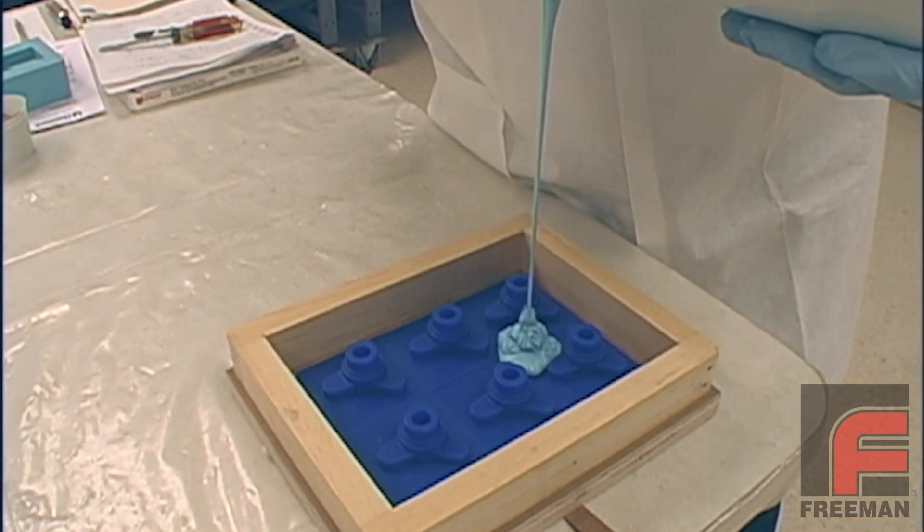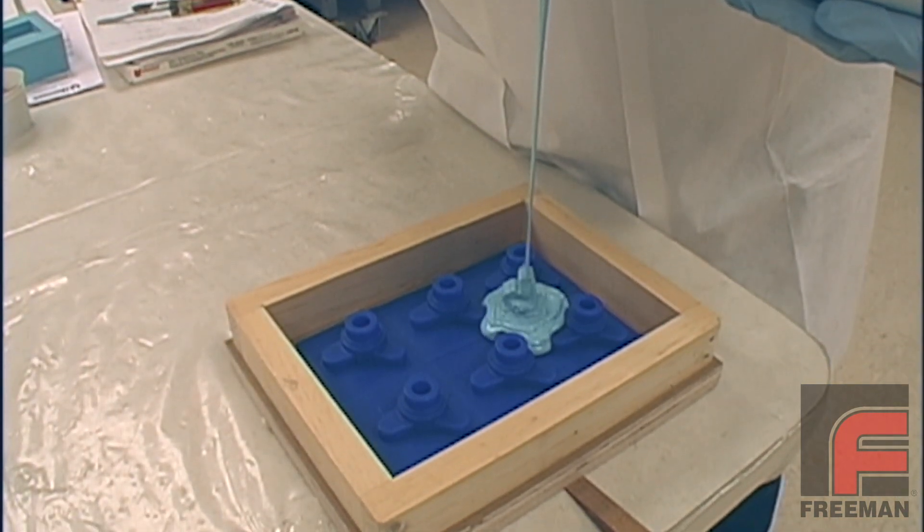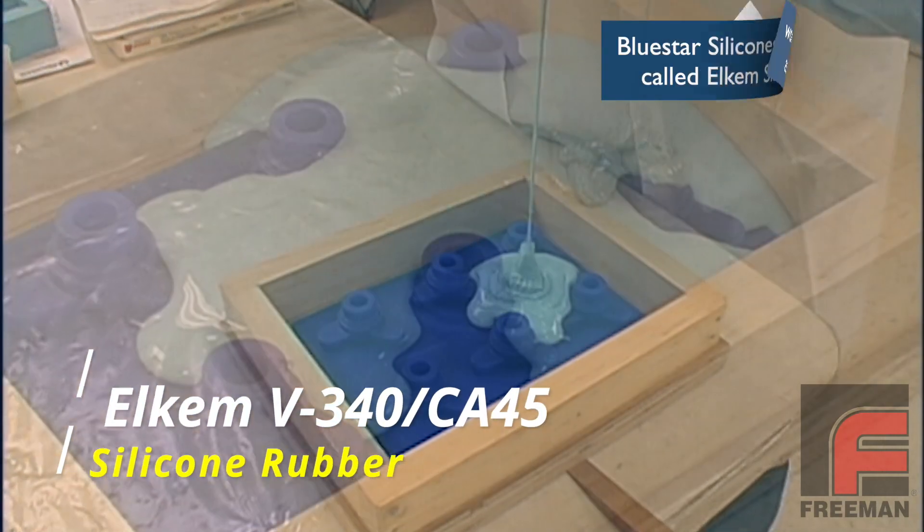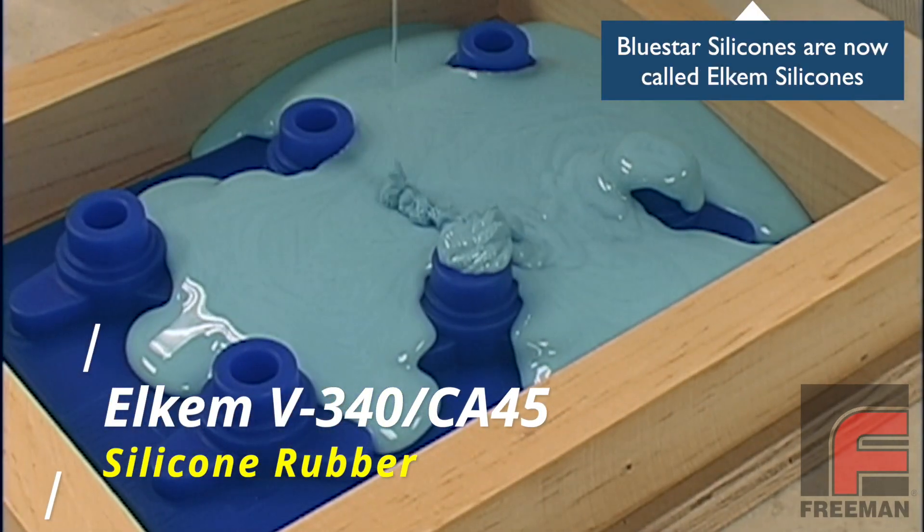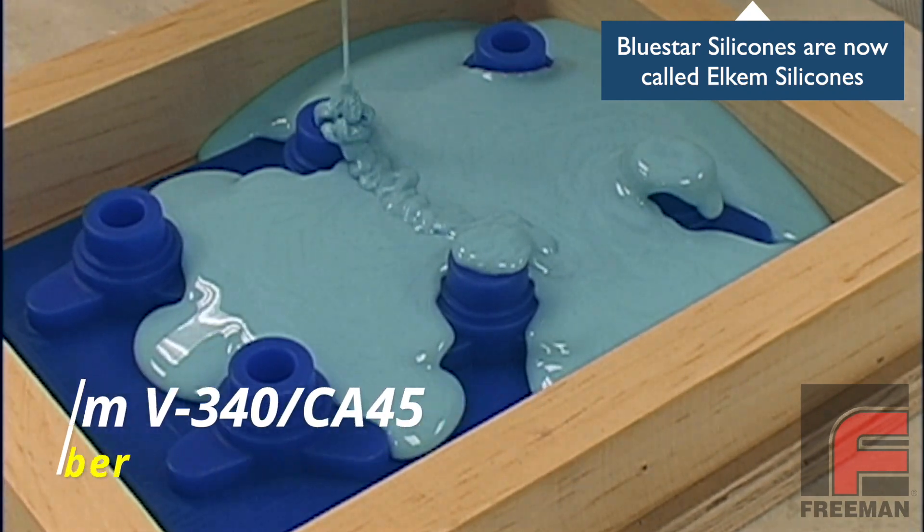With the mold frame reattached, we begin to pour our Bluestar V340 silicone rubber. We pour in a narrow stream, which enables the material to easily flow around detailed edges and into cavities.